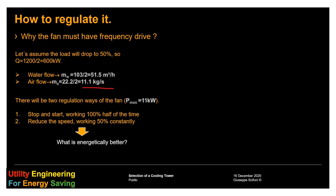There will be two regulation ways. Considering the power fan 11 kW, we can either stop and start the fan, working half of the time, but every time at 100%, or reduce the speed, working at 50% of the load, but constantly.